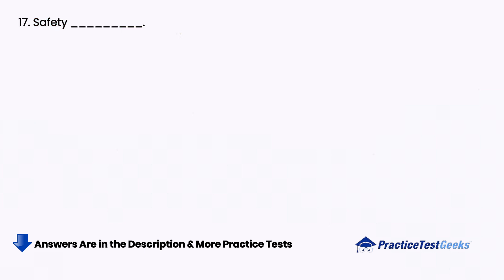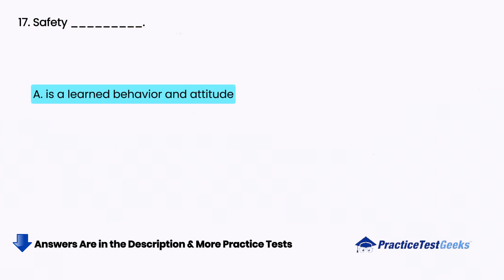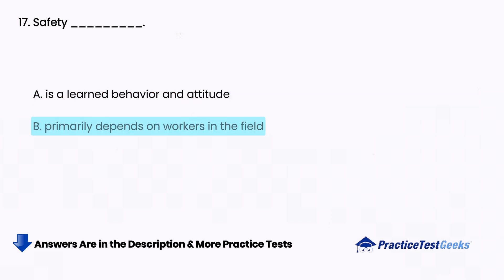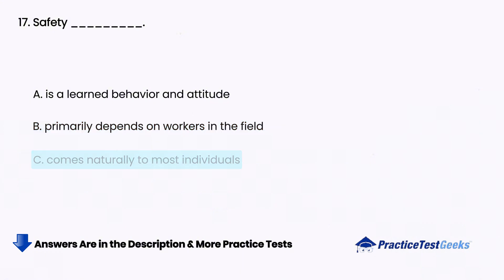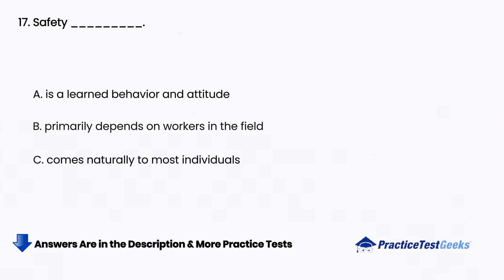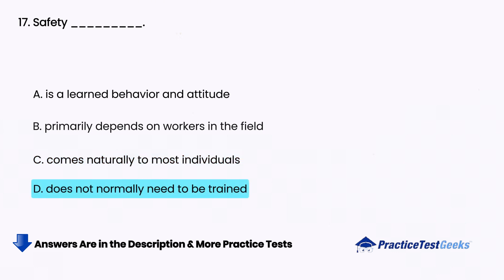Safety blank. A. Is a learned behavior and attitude, B. Primarily depends on workers in the field, C. Comes naturally to most individuals, D. Does not normally need to be trained.